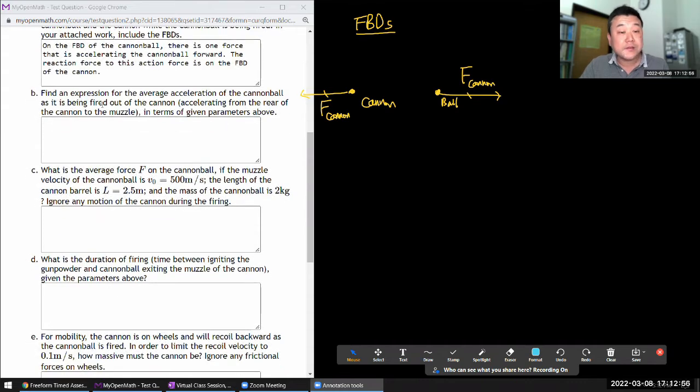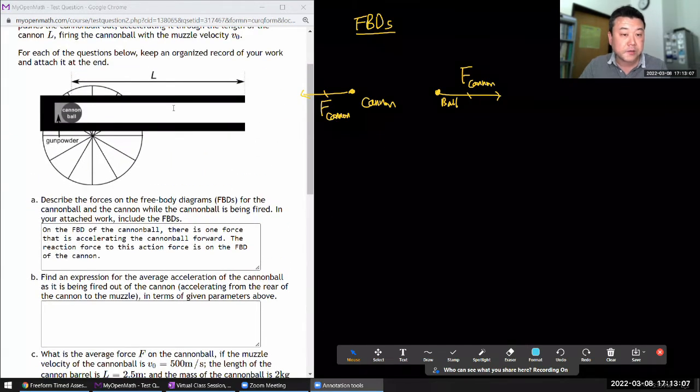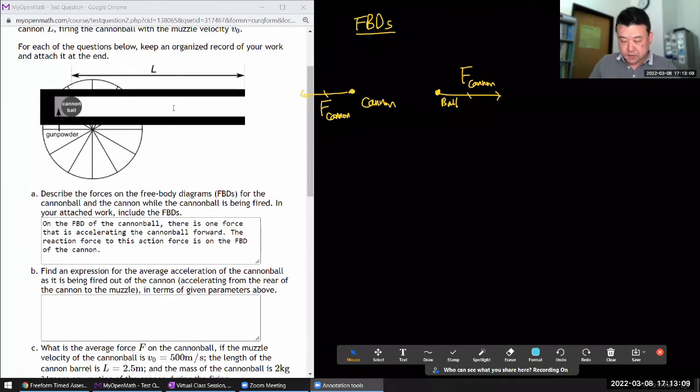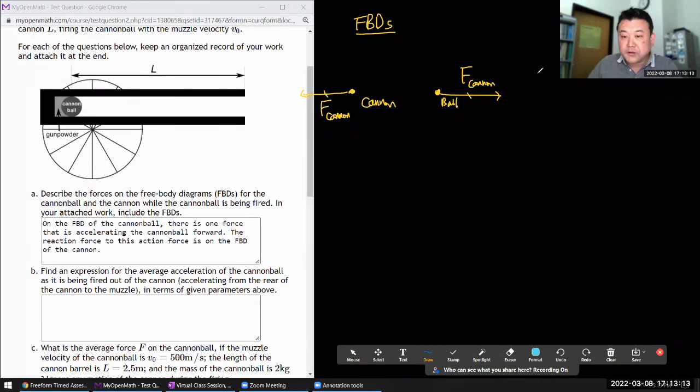It says find an expression for the average acceleration of the cannonball as it's being fired out of the cannon in terms of the given parameters above. That's the kinematics portion of it.